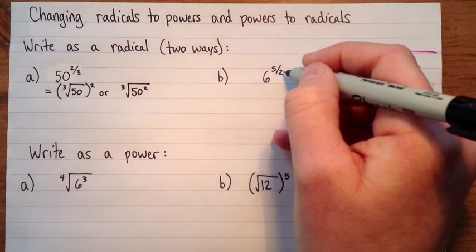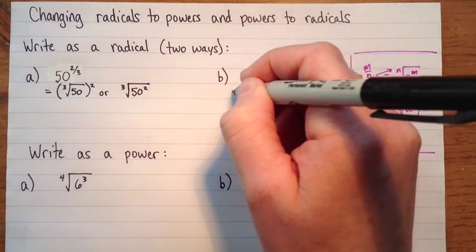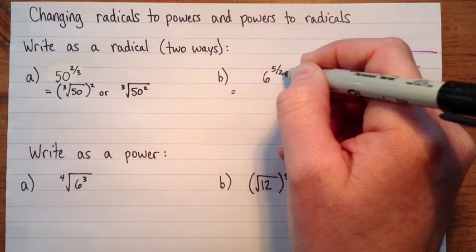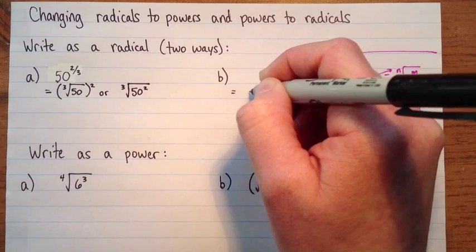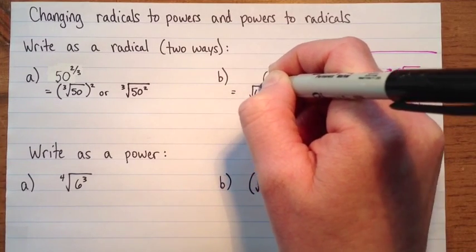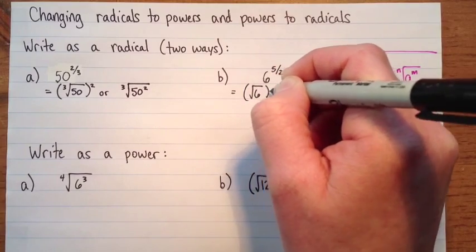Okay, in the next example we have six to the exponent five over two. So the same thing here. The two is going to be the root, so it's going to be a square root. So I can do the square root of six to the exponent five.